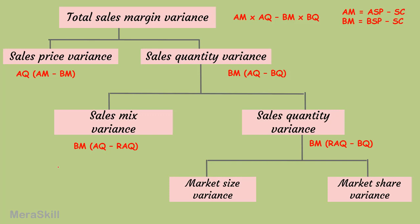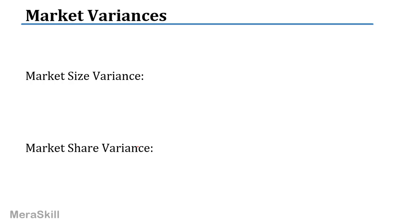The total sales variance is actual margin into actual quantity minus budgeted margin into budgeted quantity, divided into the price variance and the quantity variance. Let's call the quantity variance the volume variance. So we have a mix variance, and this is called the sales quantity variance.